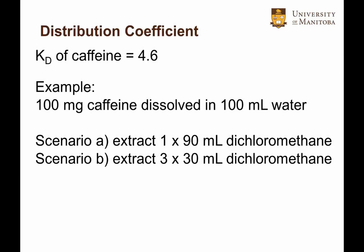Now back to the question of why more frequent small volume extractions is better than one large volume. Let's use an example of 100 milligrams of caffeine dissolved in 100 milliliters water, and we plan to extract with dichloromethane since we know the partition coefficient. We'll look at the calculations using one 90 milliliter dichloromethane aliquot and three 30 milliliter dichloromethane aliquots.